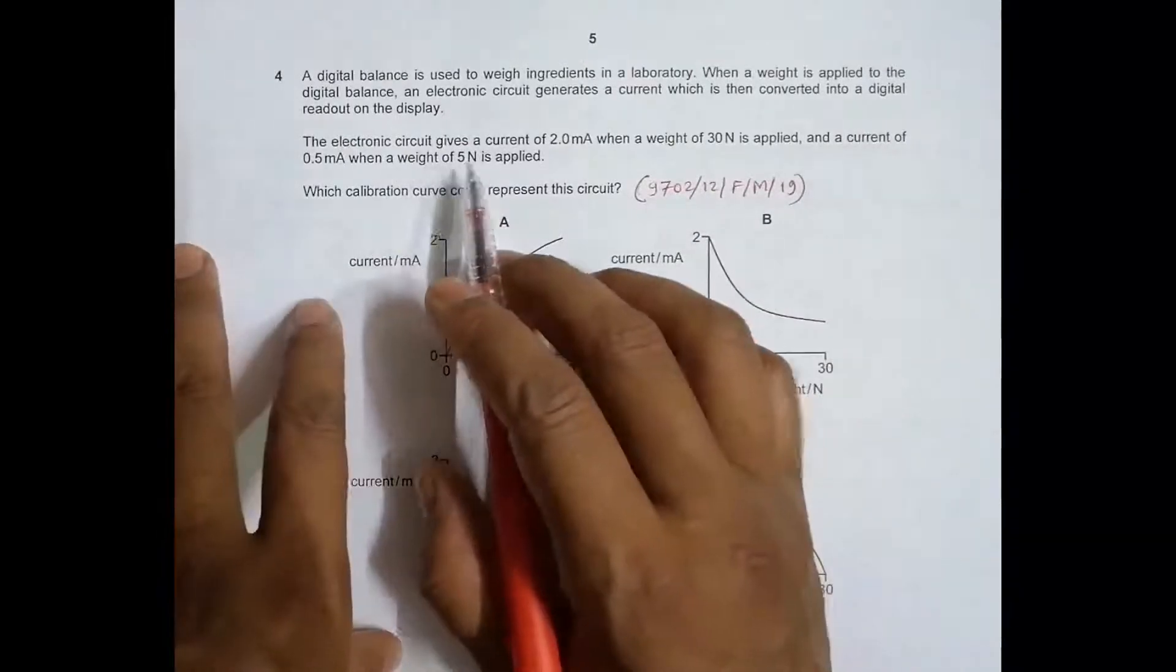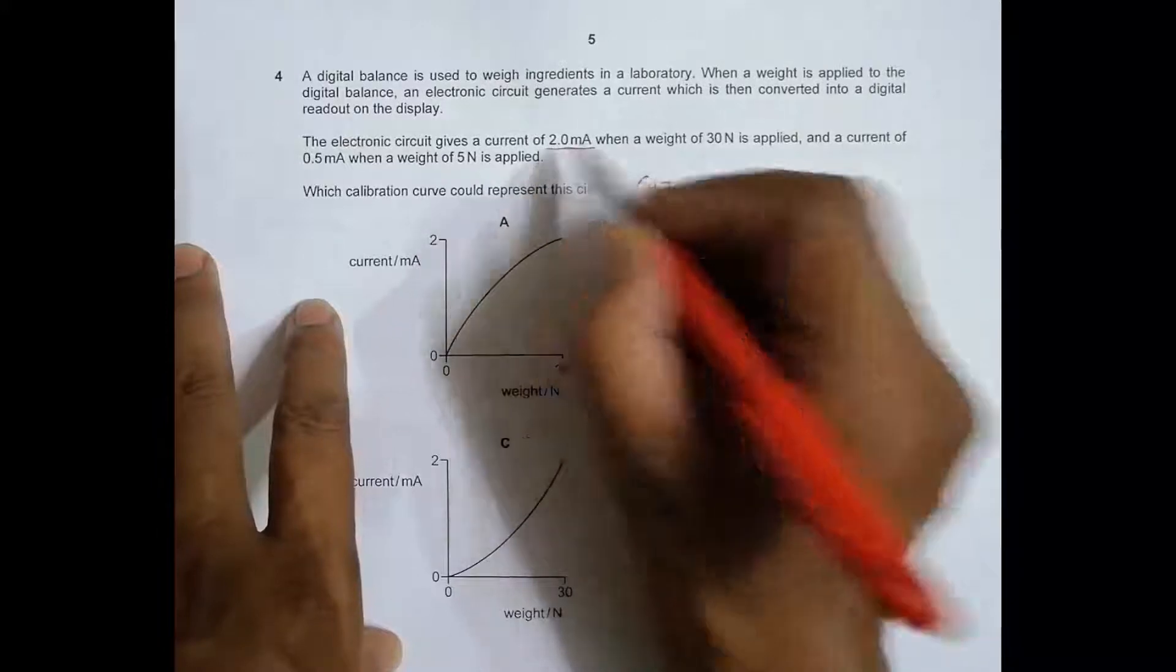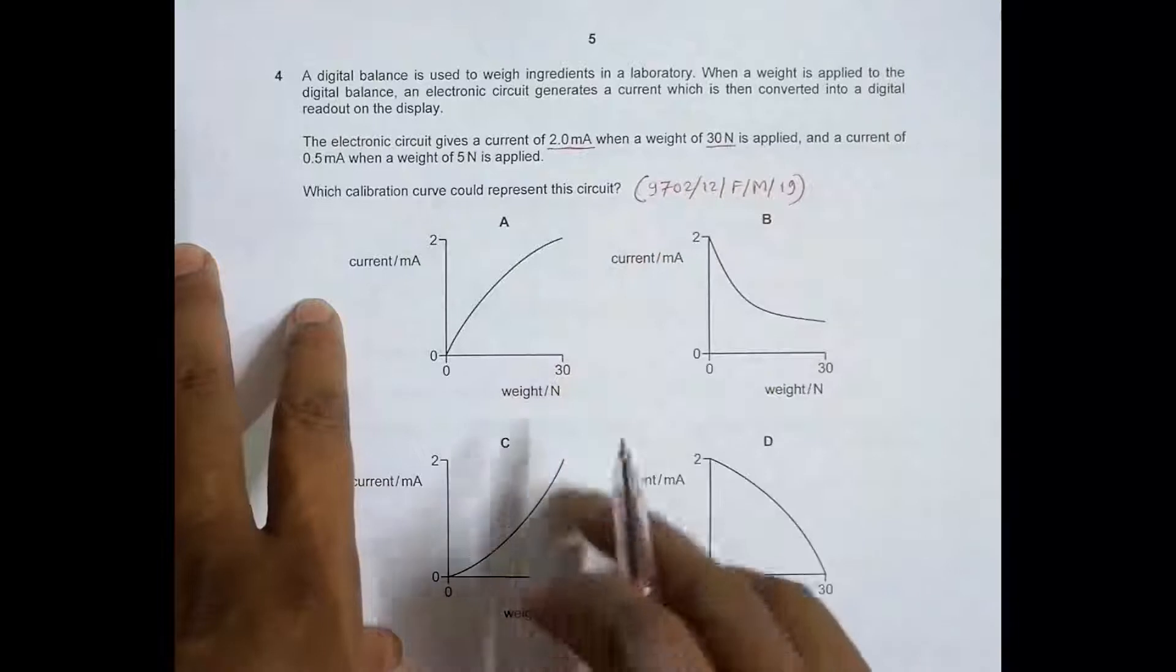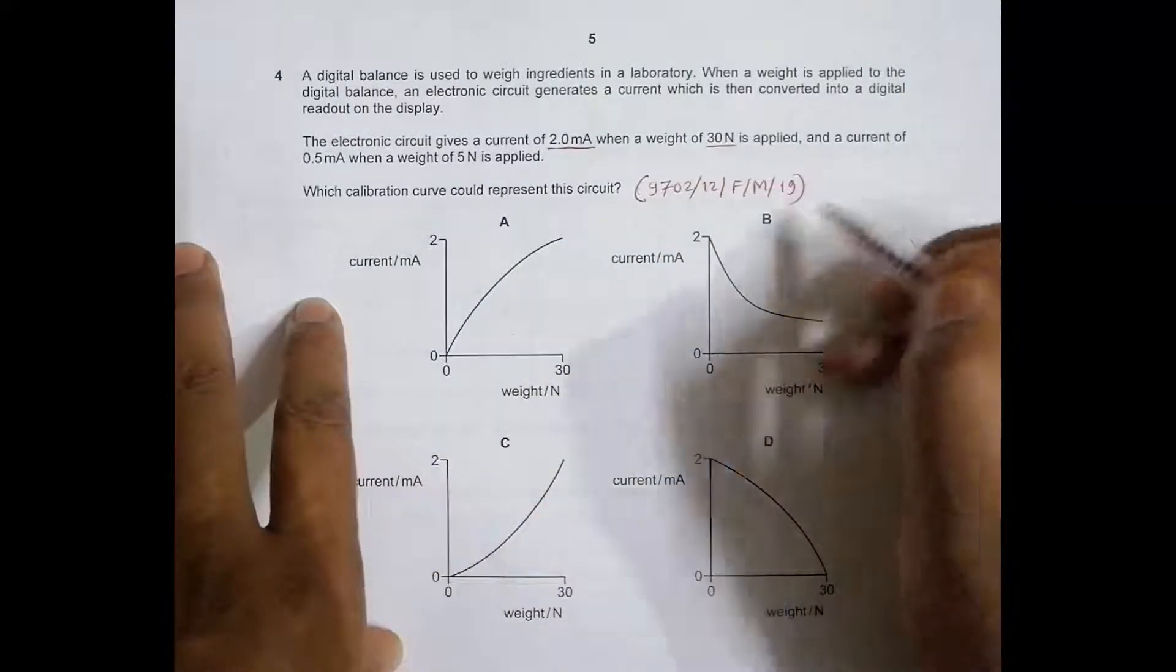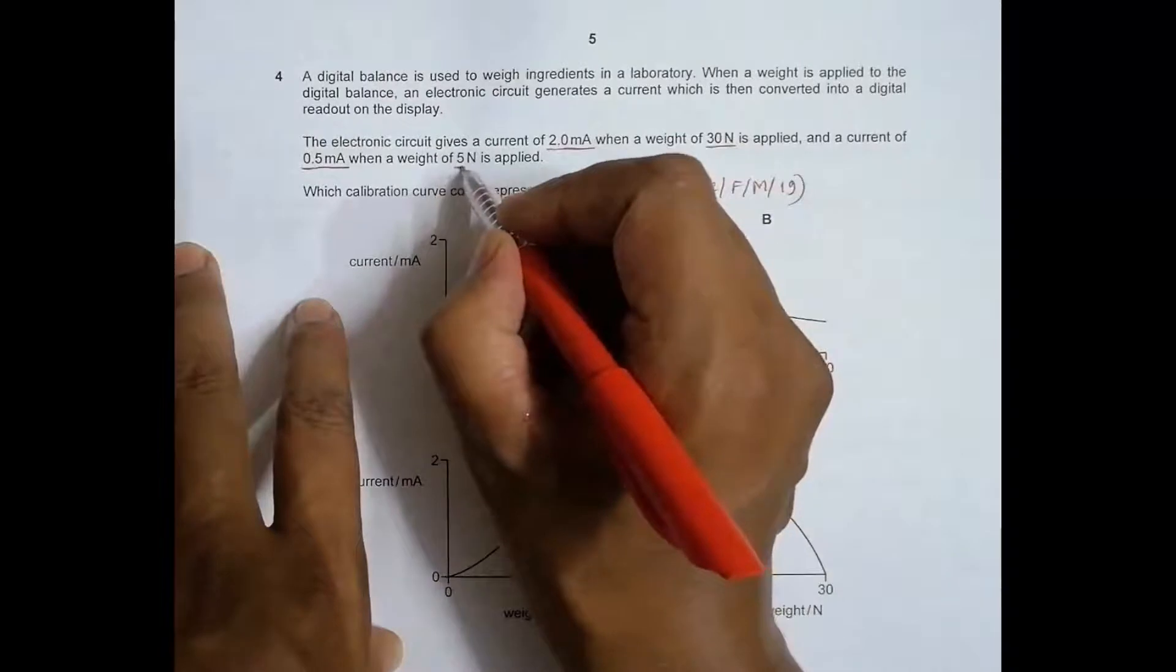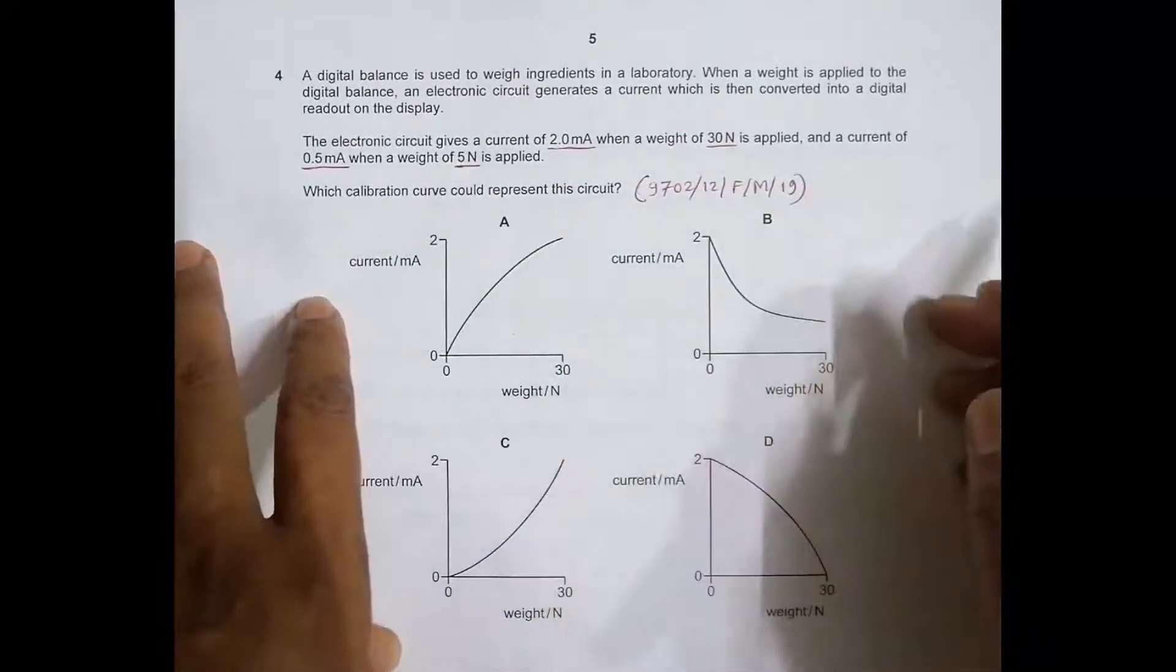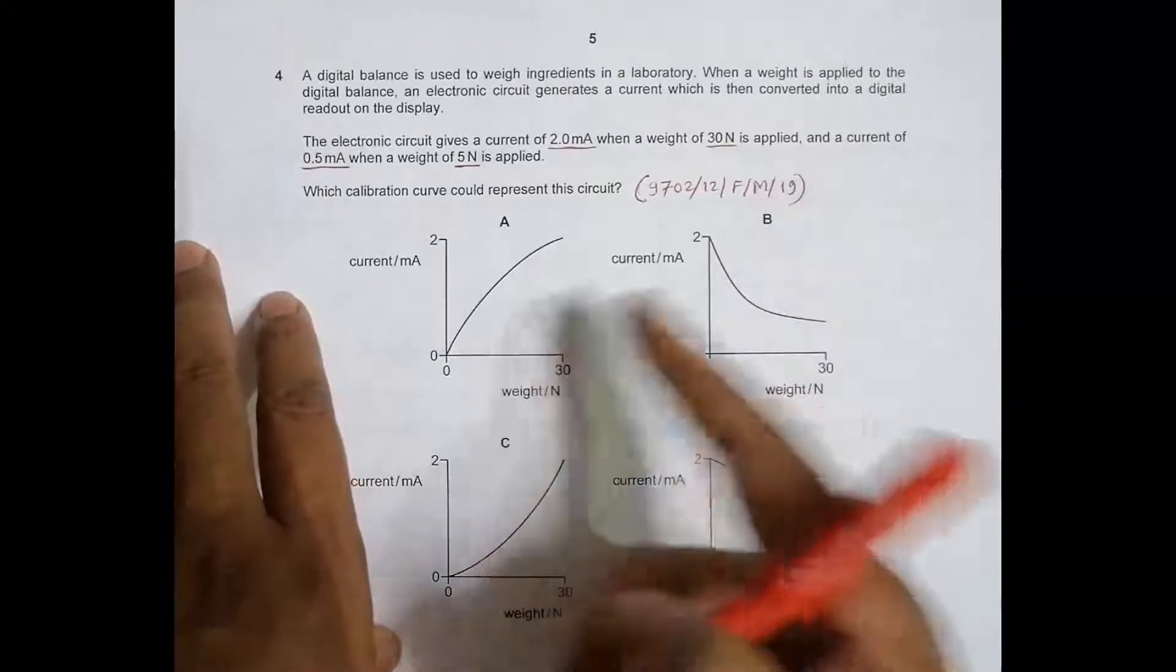The electronic circuit gives a current of 2.0 milliampere when a weight of 30 Newtons is applied, and a current of 0.5 milliampere when a weight of 5 Newtons is applied. Which calibration curve could represent this circuit?